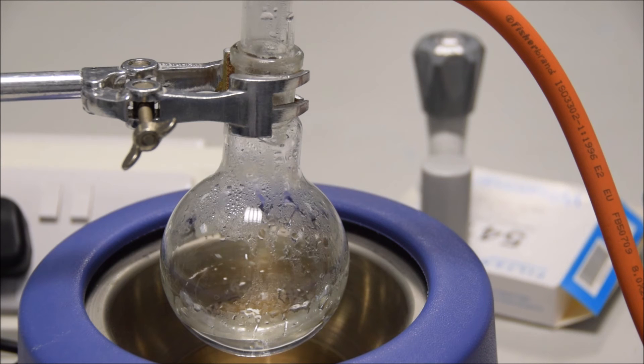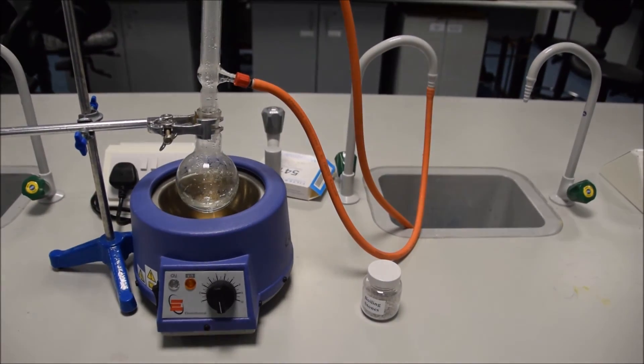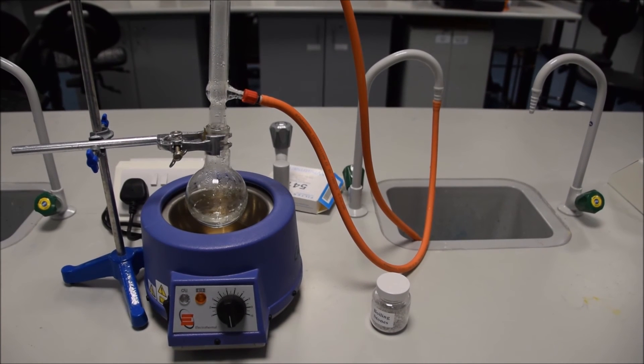Again, you can see, if you look closely, as our flask cools down, eventually evaporation stops, and the condenser stops dripping liquid down into the flask. You can also see the bumping granules are down in the bottom of that flask. They're essential. Don't forget them.